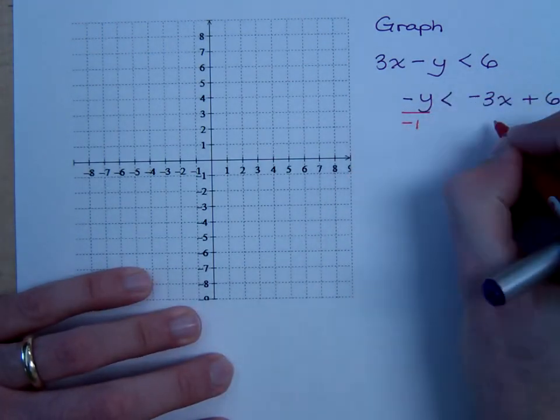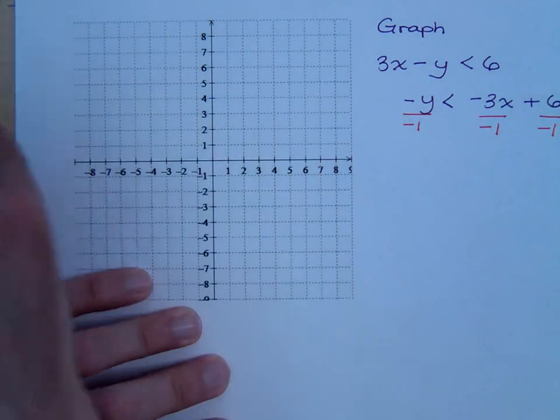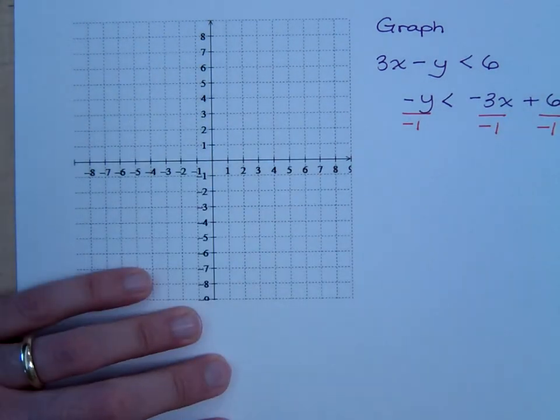Divide by negative 1. See, you know I'm going to have something like this, right? What's the purpose? Why would I have to divide by negative 1?